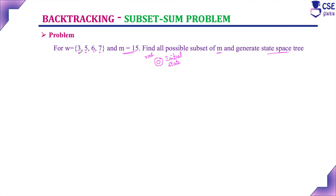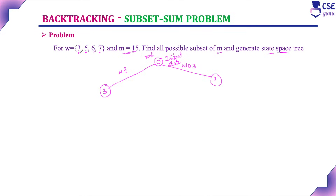First, consider the first element 3. If you are adding element 3, then 0 + 3 = 3. On the right side of the state space tree, if you are not adding element 3, the value will remain 0.